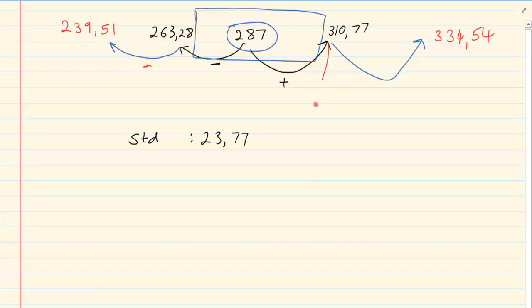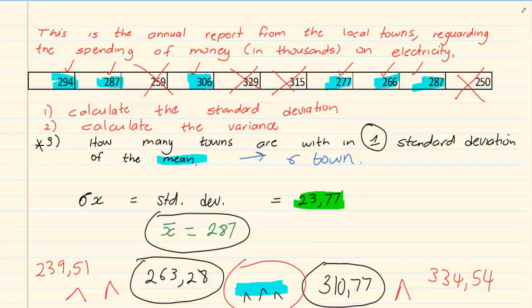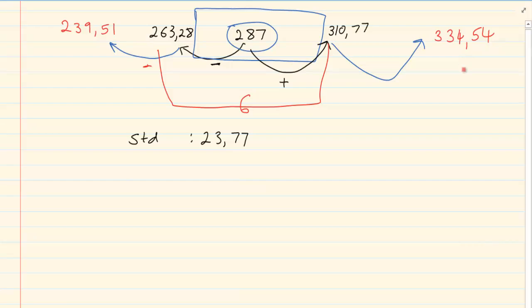Now we already know that six data lies in this space. So let's look at the second deviation. The second deviation is 239,54 and 334,54. Now if we look at the ones that did not work. We're looking at 259, 259 is working now. 329 is working. 315 is working. And 250 is working. So what do we notice is that within two deviations all 10 are working.